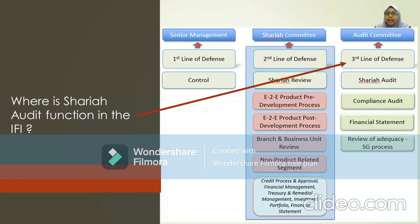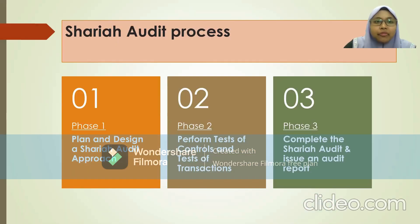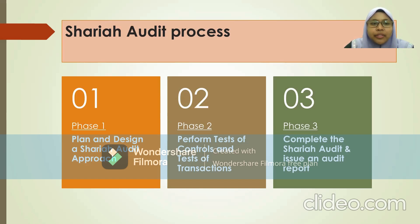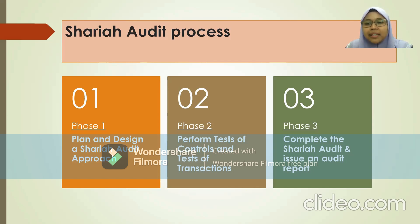The Sharia audit function is under the third line of defense, and they have to report directly to the audit committee. Moving to the Sharia audit process, which is the main focus of today's presentation, there are three phases: first, to plan and design the Sharia audit approach; second, to perform test of control and test of transaction; and lastly, to complete the Sharia audit and issue the audit report.